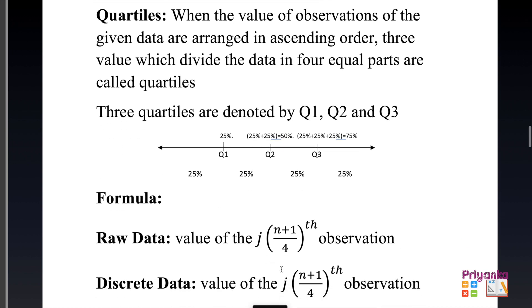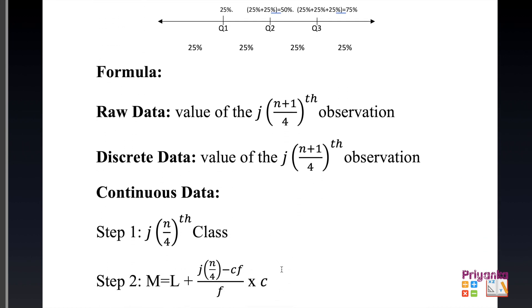The quartile formula is the same as median but with two changes: a variable j is introduced, and the divisor changes to 4 instead of 2. Whatever quartile is asked — Q1, Q2, or Q3 — that number goes in place of j. So for Q1, j=1; for Q2, j=2; for Q3, j=3.